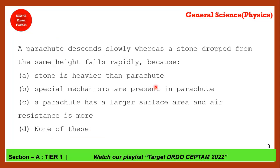A parachute descends slowly whereas a stone dropped from the same height falls rapidly — why? A parachute has a large surface area, and due to this the air resistance is more, which is why the parachute descends slowly whereas a stone dropped from the same height goes down rapidly. Option C is the correct answer.